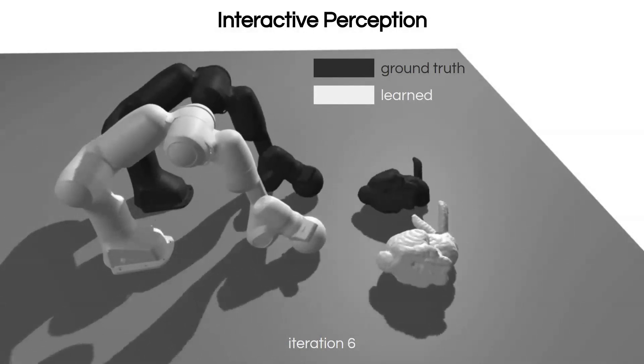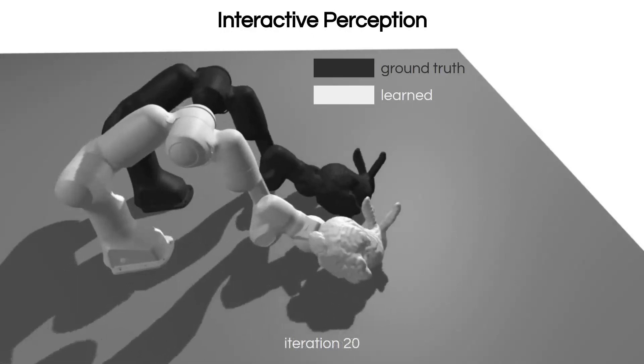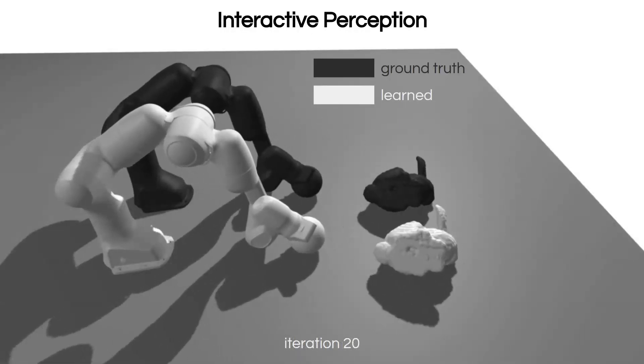After 20 iterations, we have almost perfectly recovered the ground-truth parameters used to generate the dataset.